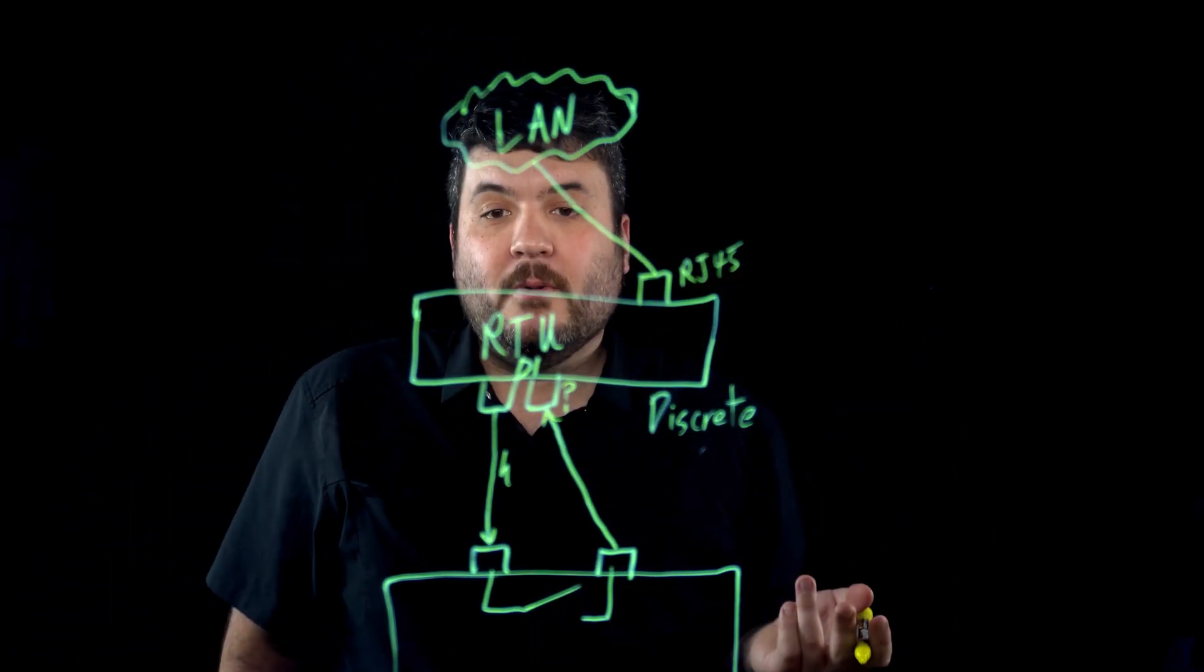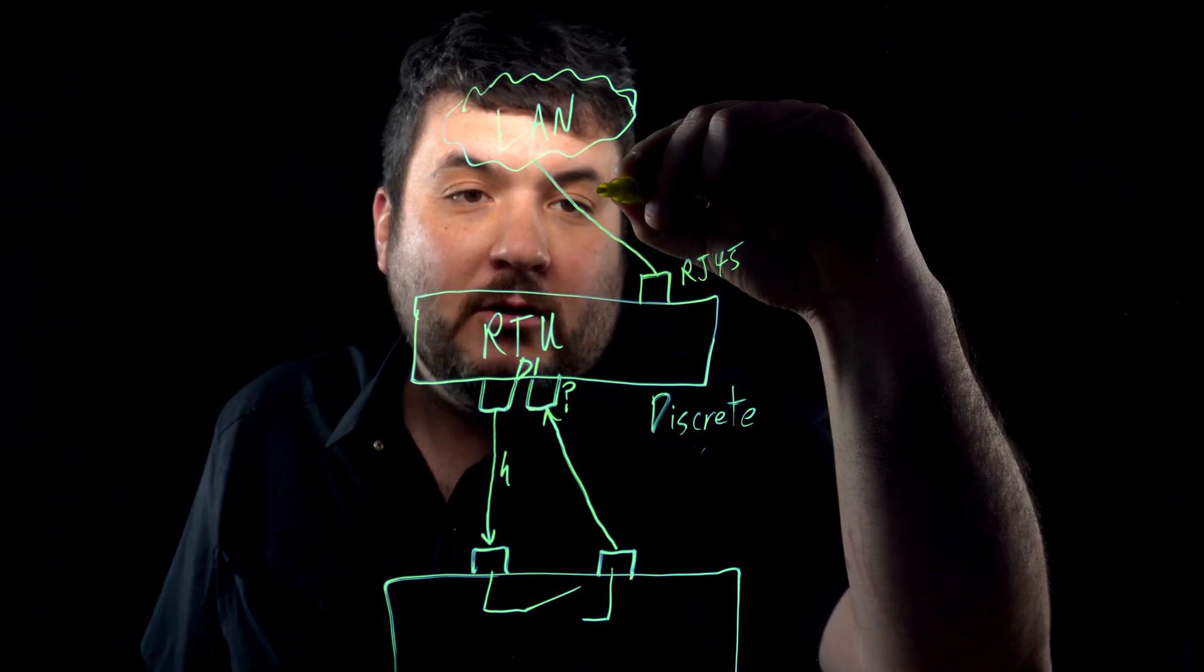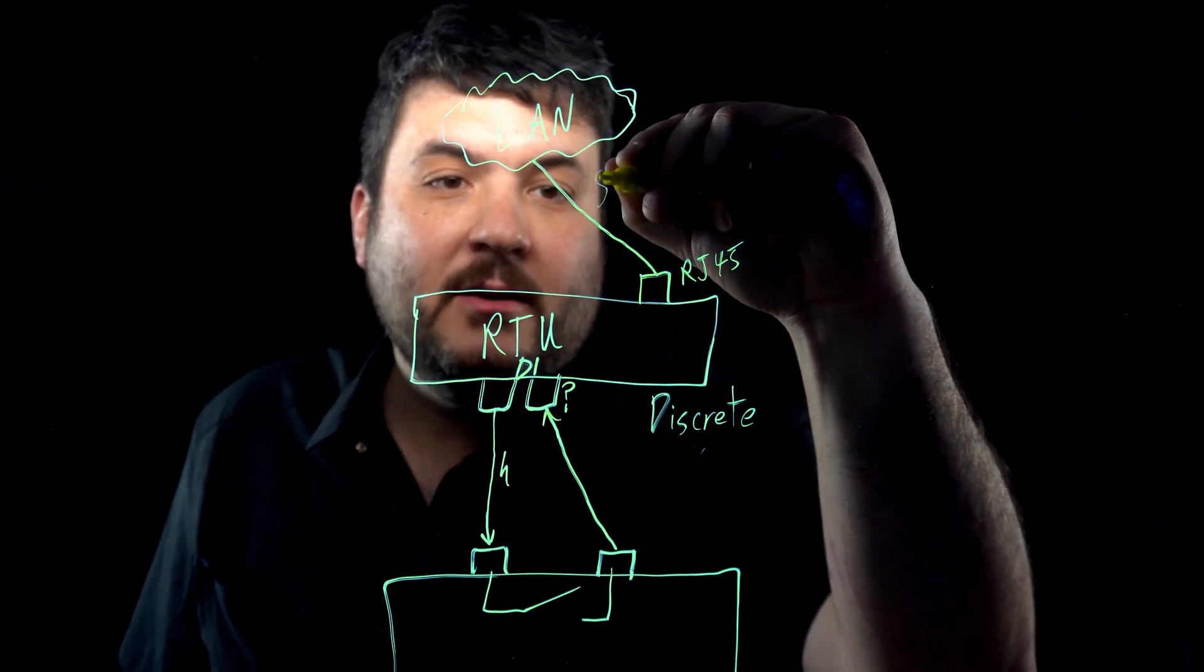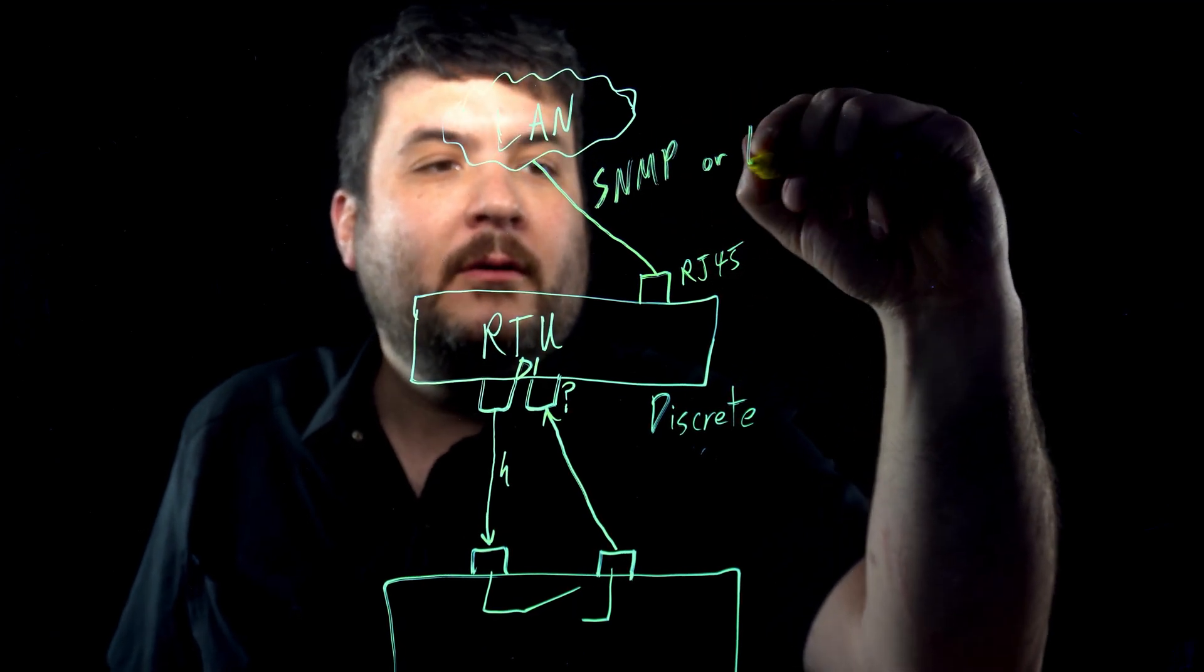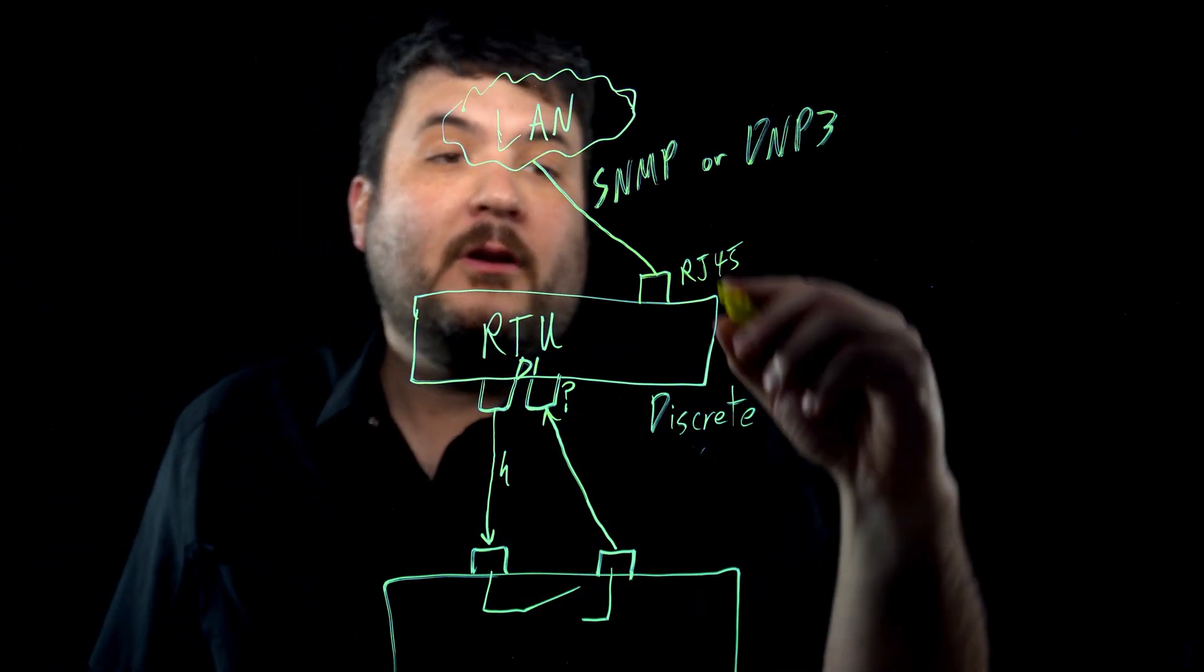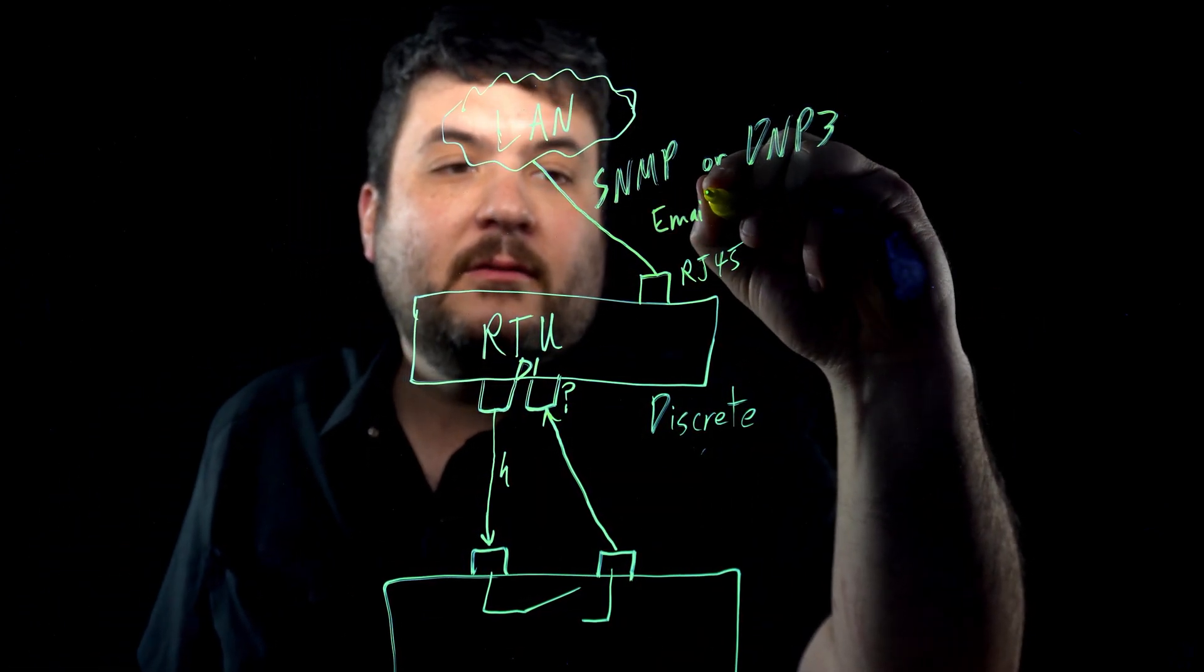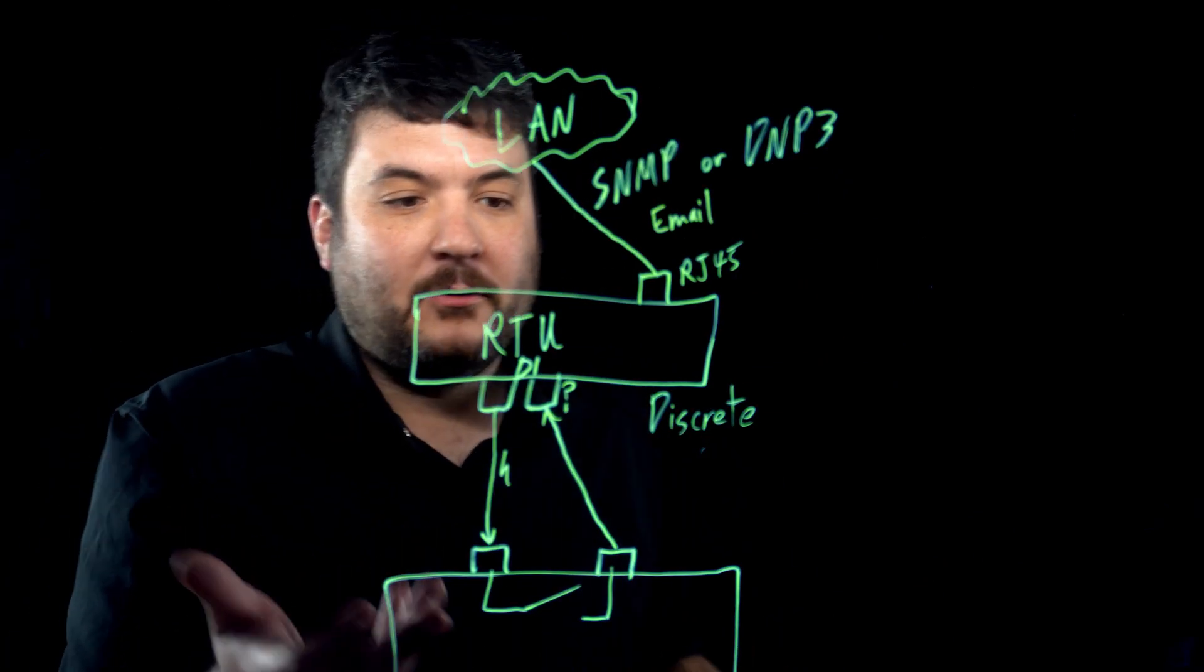There are many different options. You have lots of different protocols. You can talk in terms of SNMP is a very common one. You could have DNP3. Many different protocols. You can also do things like send email messages. So, you have a great many options when it comes to taking a contact closure.